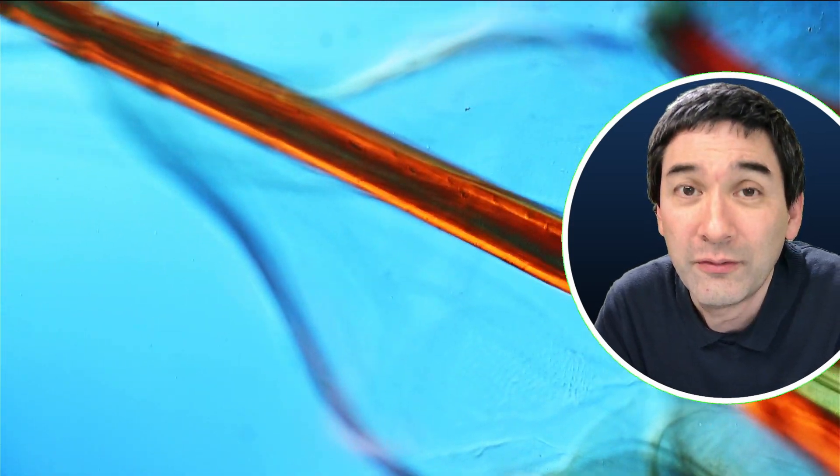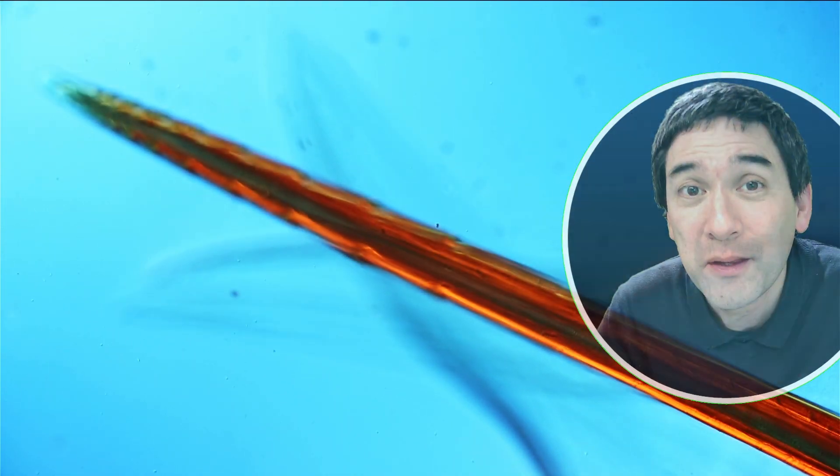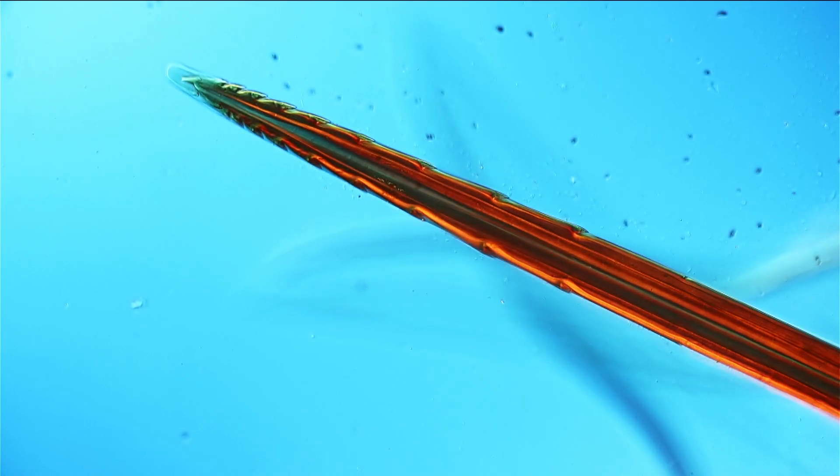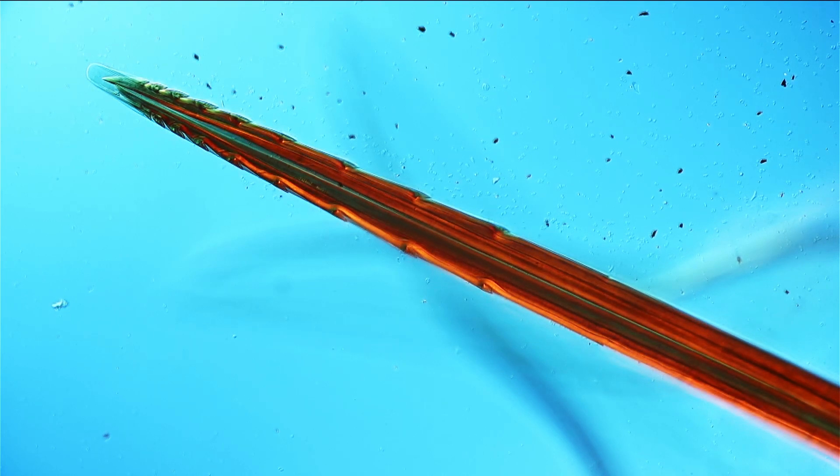If you want to pull out the stinger, it's not able to come out very easily because those tiny little hooks that you see on the stinger will actually prevent it from coming out. Those little hooks kind of anchor the stinger inside of the skin.